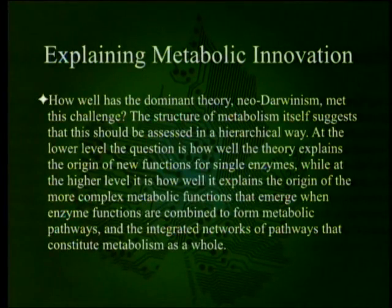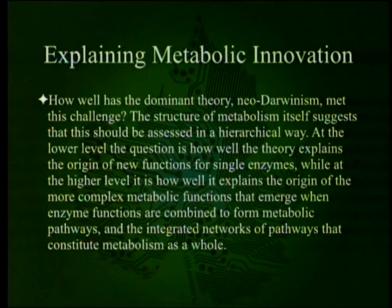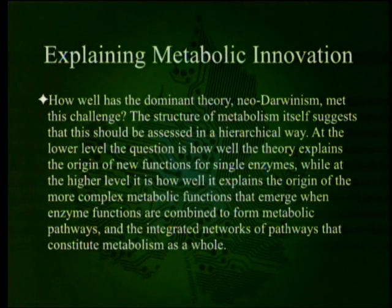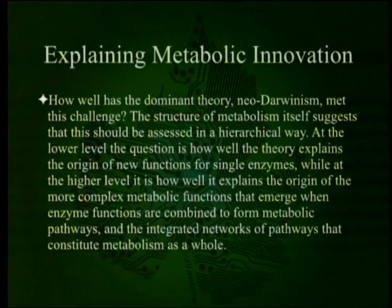This is a very difficult chapter to summarize rapidly. How well has the dominant theory of Neo-Darwinism met this challenge? The structure of metabolism itself suggests this should be assessed in a hierarchical way. At the lower level, the question is how well the theory explains the origin of new functions for single enzymes. While at the higher level, it is how well it explains the origin of the more complex metabolic functions that emerge when enzyme functions are combined to form metabolic pathways and the integrated networks of pathways that constitute metabolism as a whole.